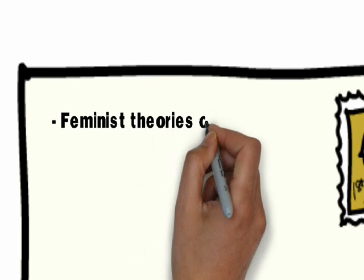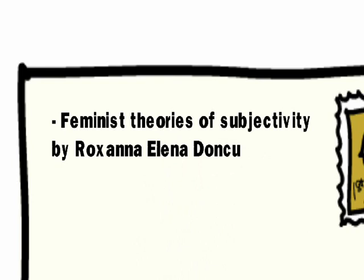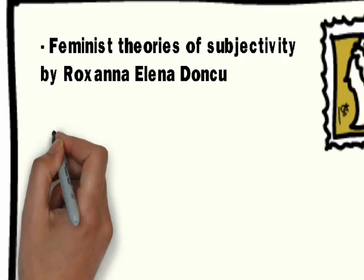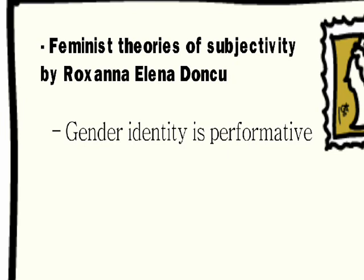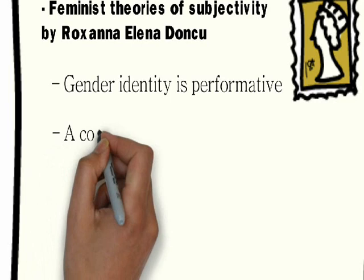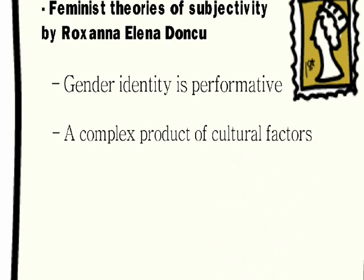The second paper we chose is called Feminist Theories of Subjectivity by Roxana Elena Donku. She focuses on many things throughout the document. First, she talks about Judith Butler and her theory that gender identity is performative. She says that the masculine and the feminine are not opposites or different. On the contrary, gender identities are performative, meaning that the social identity that is perceived as feminine or masculine is not the result of a natural essence, but a complex product of cultural factors and historical forces that cooperate to define the norms of proper feminine or masculine behavior.